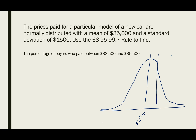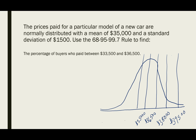We're going to go three standard deviations above. So we take our $35,000 and add one standard deviation, which is $1,500. That gives us $36,500. Adding one more standard deviation gives us $38,000, and one more gives us $39,500. On the other side, we subtract: $35,000 minus $1,500 gives us $33,500. Subtracting another standard deviation gives us $32,000, and one more gives us $30,500.